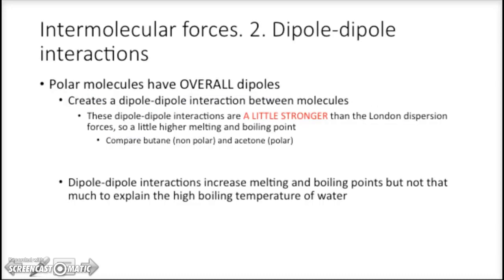First, dipole-dipole interactions. Polar molecules have an overall dipole. And with an overall dipole, I have a site that's a little bit positive, and a site a little bit negative. And they attract each other. They have dipole-dipole interactions, that are a little bit stronger than the London dispersion forces. So, a little bit higher melting and boiling point.